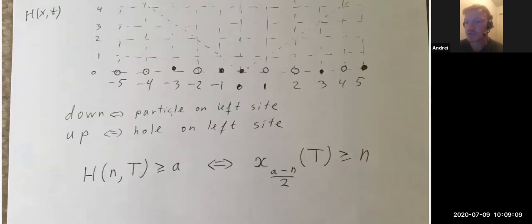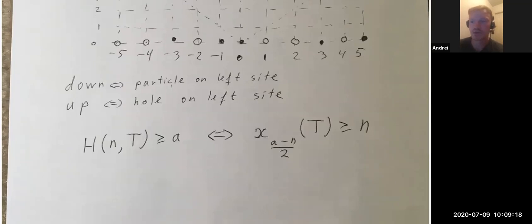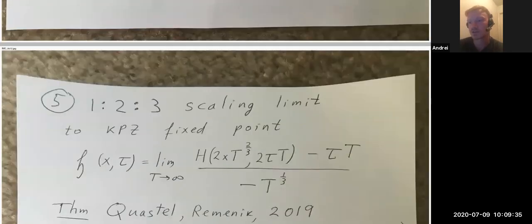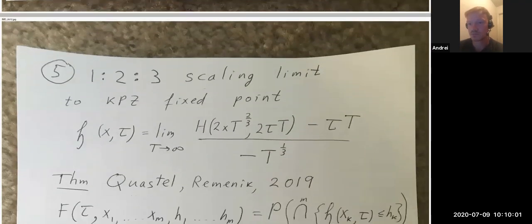The height function is related to the positions of the particles. We want to look at the scaling limit of TASEP — the 1:2:3 scaling limit — to obtain the KPZ fixed point. We scale the position of the particle, the index of the particle, and the time, and the field h(x,τ) is of our interest. This is called the KPZ fixed point, which is a very important object in the field.